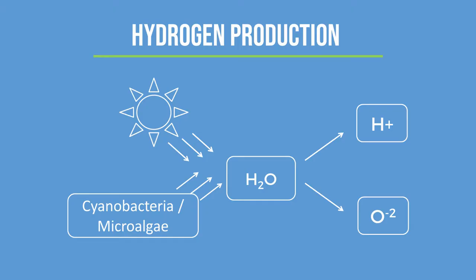Microorganisms such as cyanobacteria and microalgae split water into oxygen and hydrogen ions using sunlight. These hydrogen ions are then combined to produce hydrogen by direct or indirect routes.